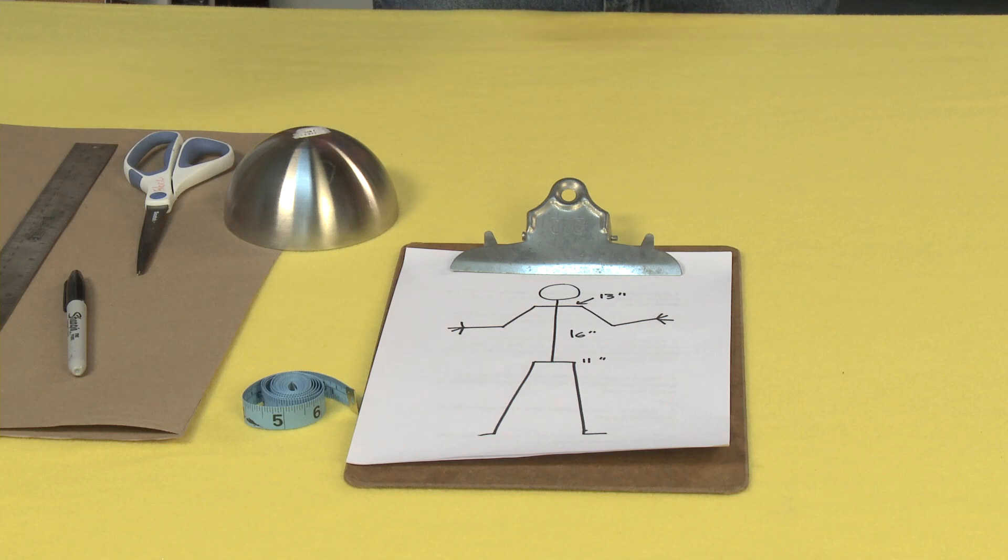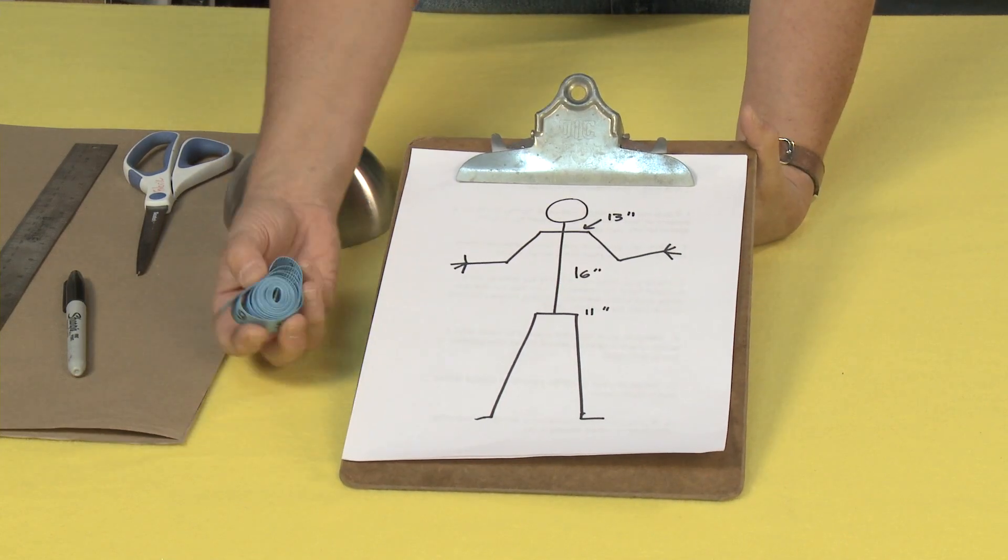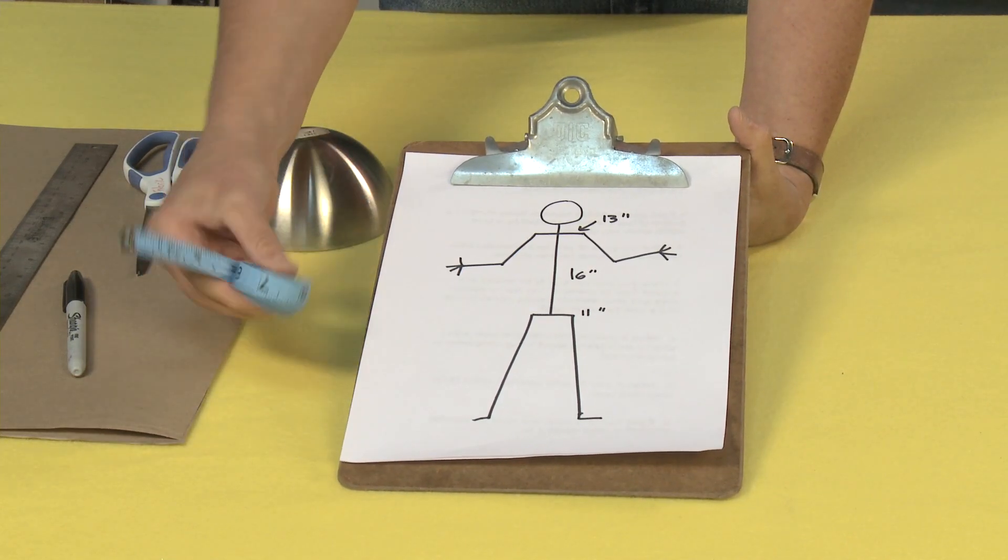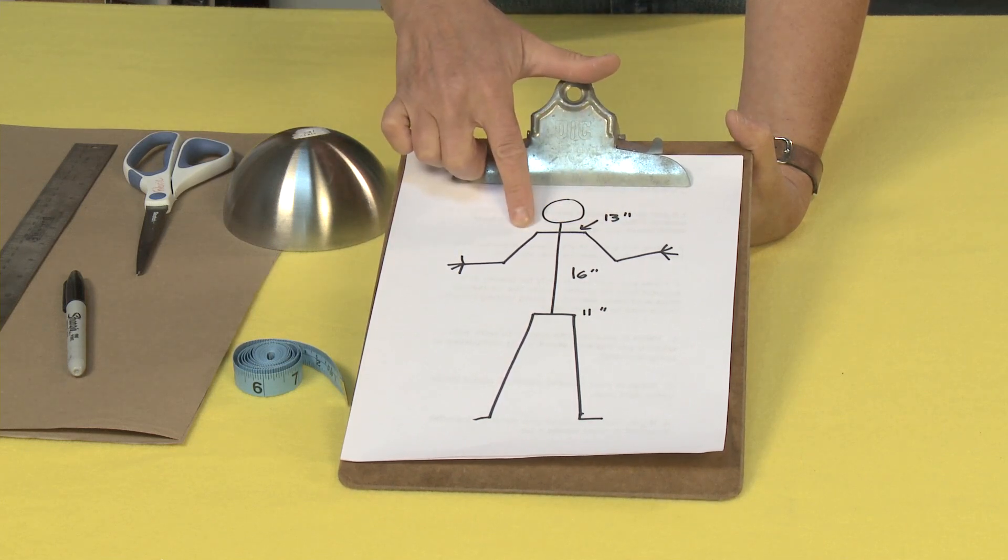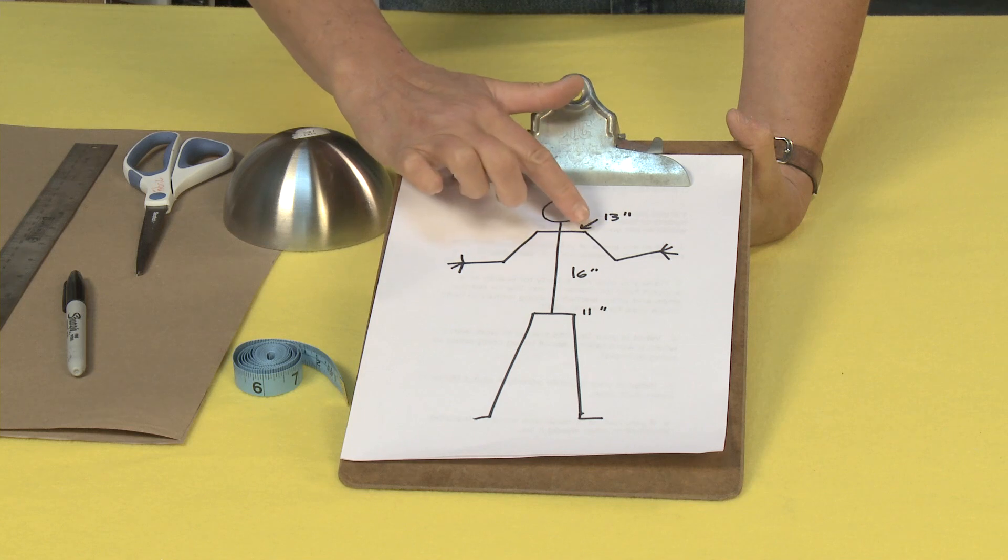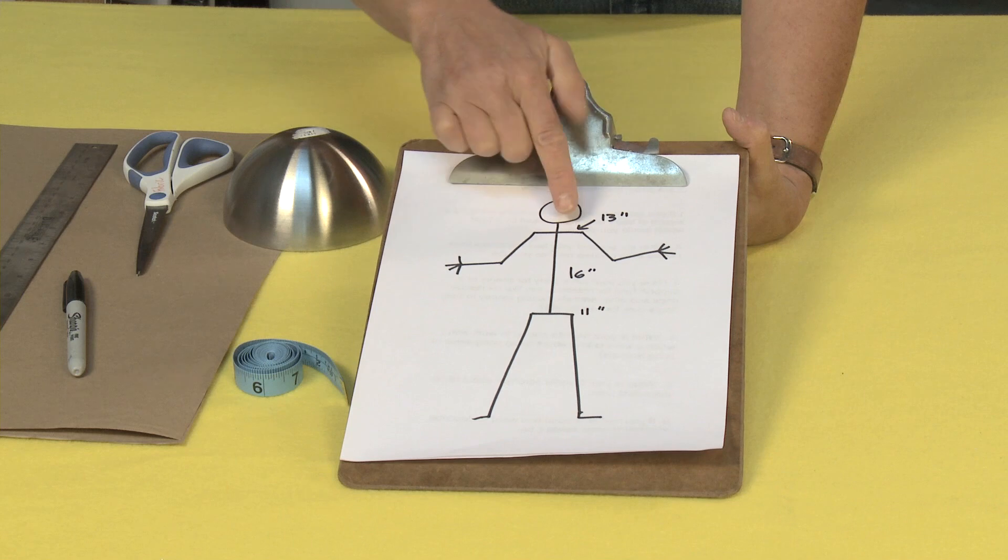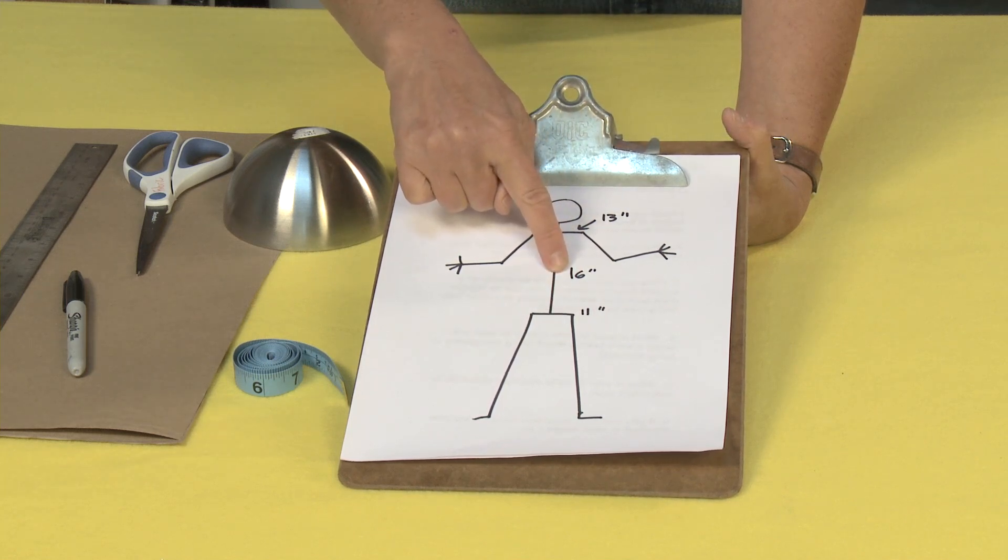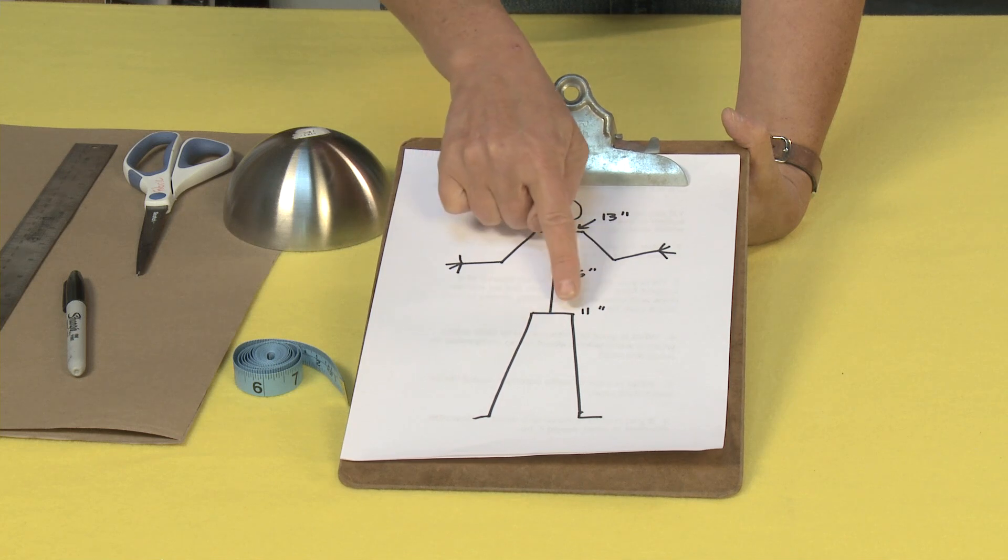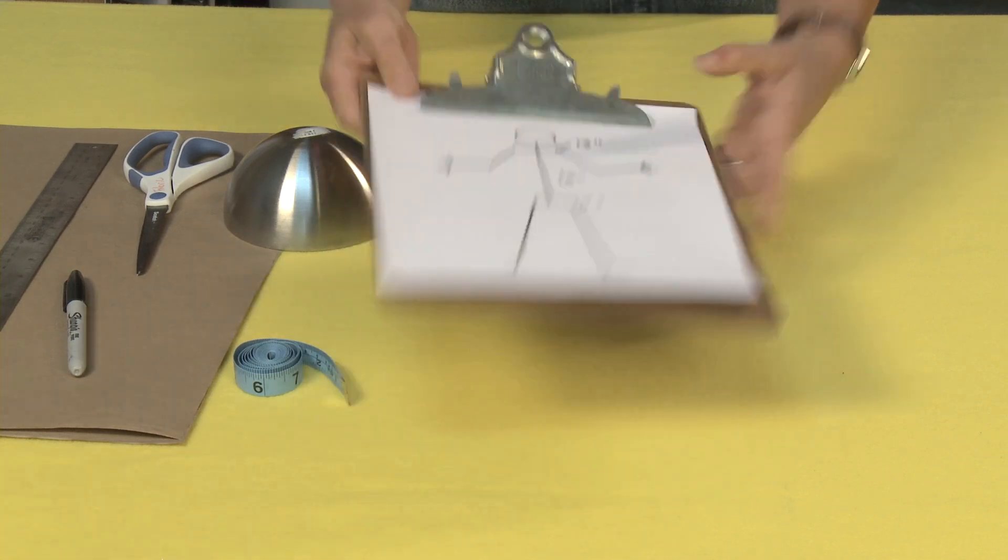So you're going to need whoever you're making this outfit for, be it a child or be it an adult, you're going to want to take the measurement of their shoulders. And so I was using a measuring tape for that, just makes it a lot easier. In this case I've got 13 inches for my shoulder. Then you want to measure from the shoulder tip to the crotch. And you want to just go straight down. So from here down to the crotch and I get 16 inches for that. And then you want to measure across the hips and that's 11 inches here. So write these measurements down just so you have them.